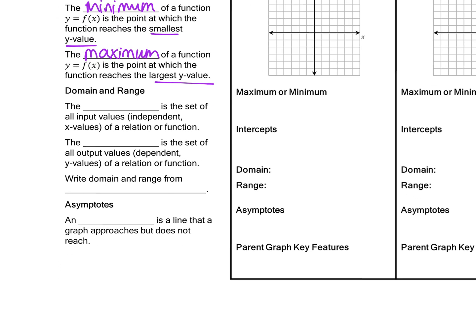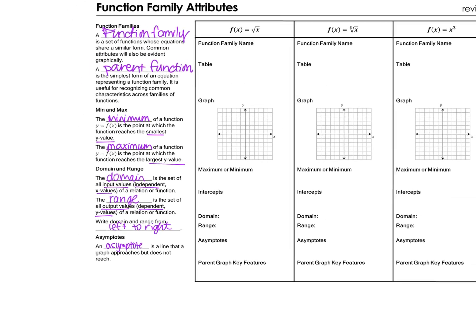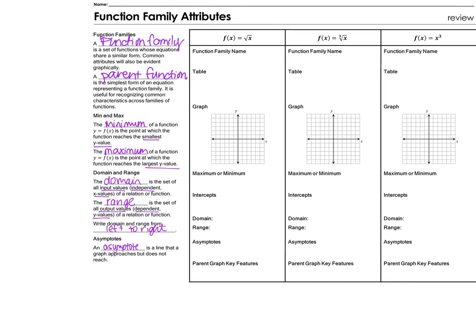The domain is the set of all input values, which are your x's — the independent variable. Your range is the set of all output values, which are your y values — the dependent variable. You always write your domain and range using interval notation from left to right. An asymptote is a line that a graph approaches but does not reach. Those are some definitions from this unit on parent functions.